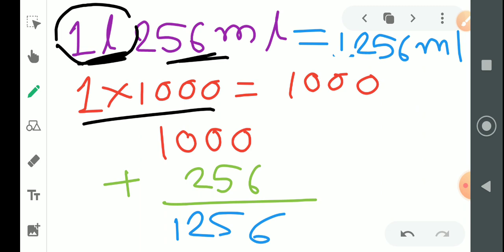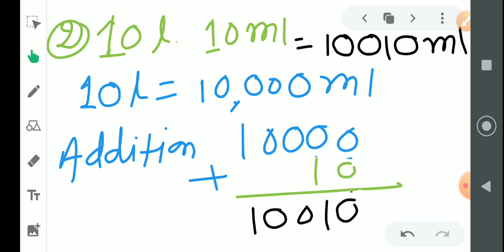Dusra rule kya tha? Ki jo ml hai, ml ko usmein add kiya. Add kiya, answer hai 1256 ml. Phir se dekhte hain. Whatever the liter is given, multiply liter to the 1000, so it becomes 1000, and then add ml into it. ML usmein add kiya, answer mila 1256 ml. Let us see one more example. Bacho aur example dekhte hain.